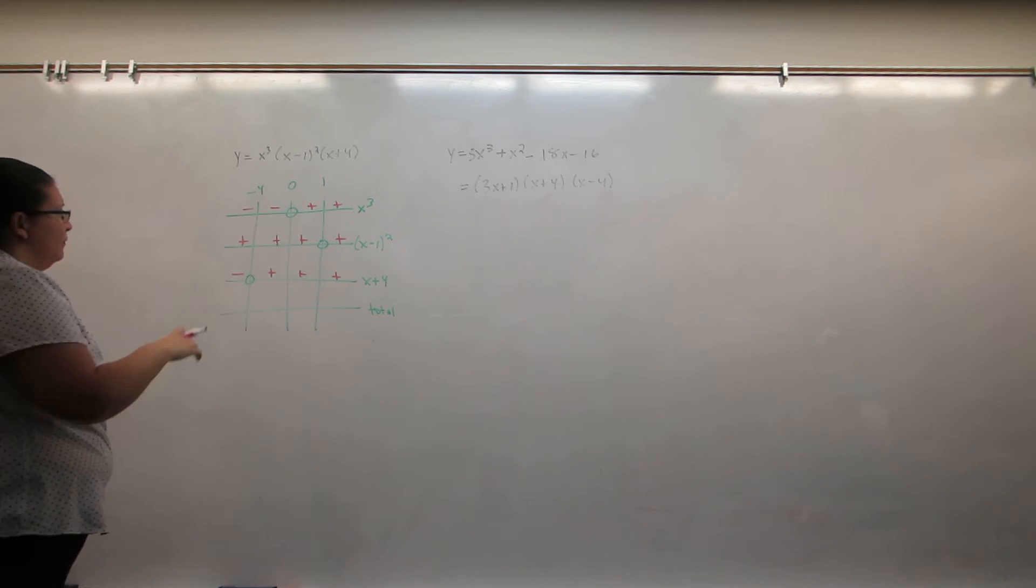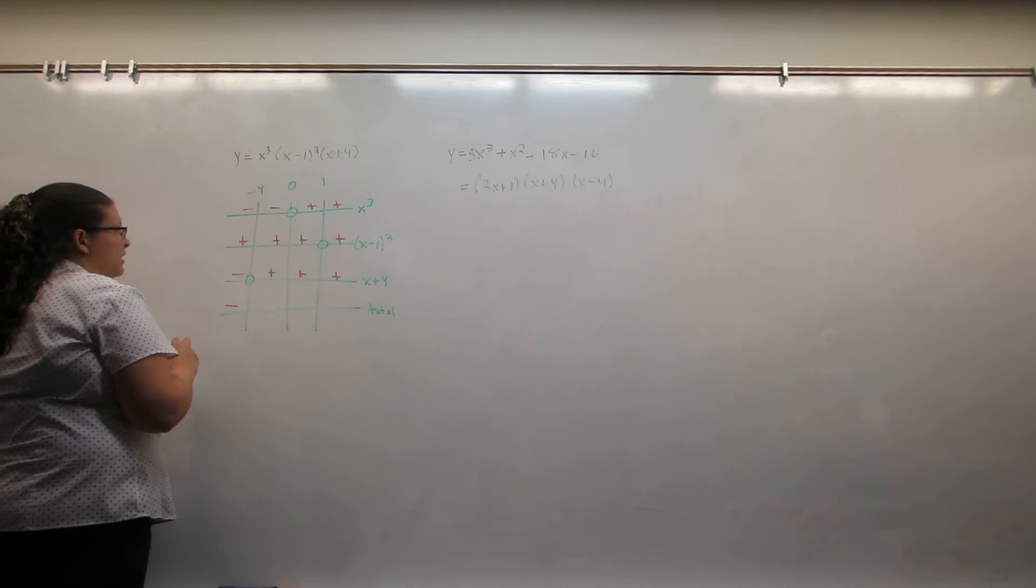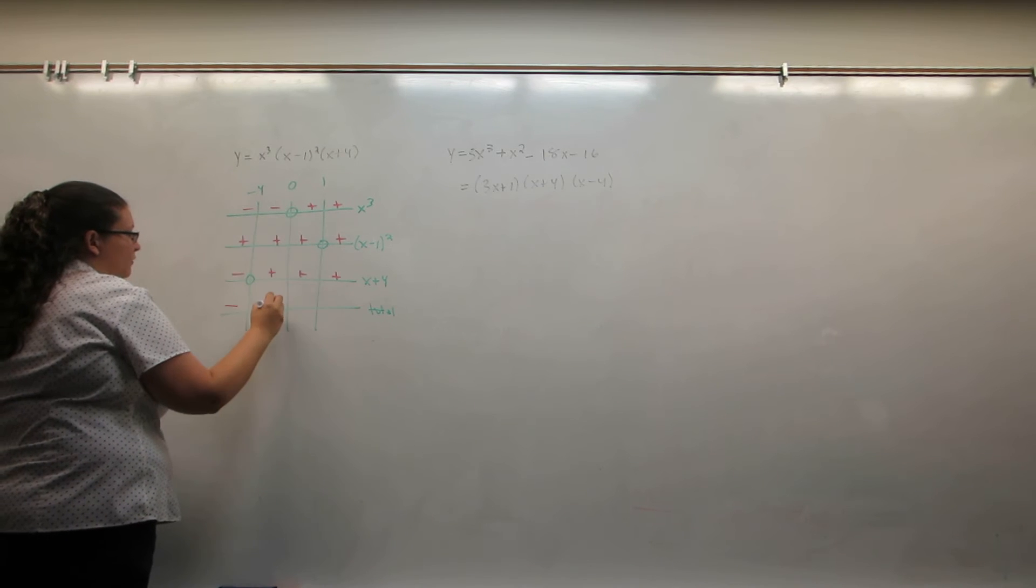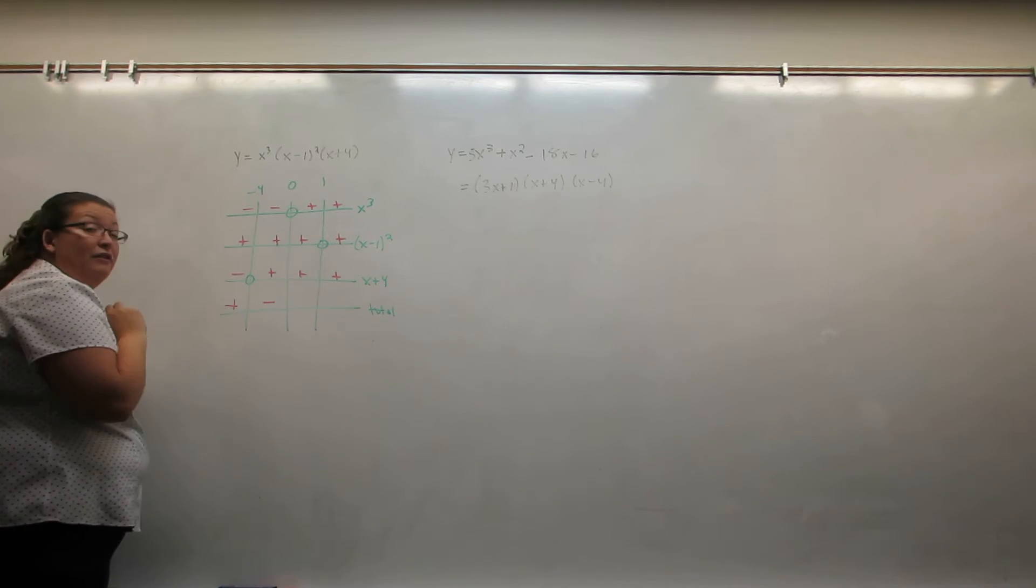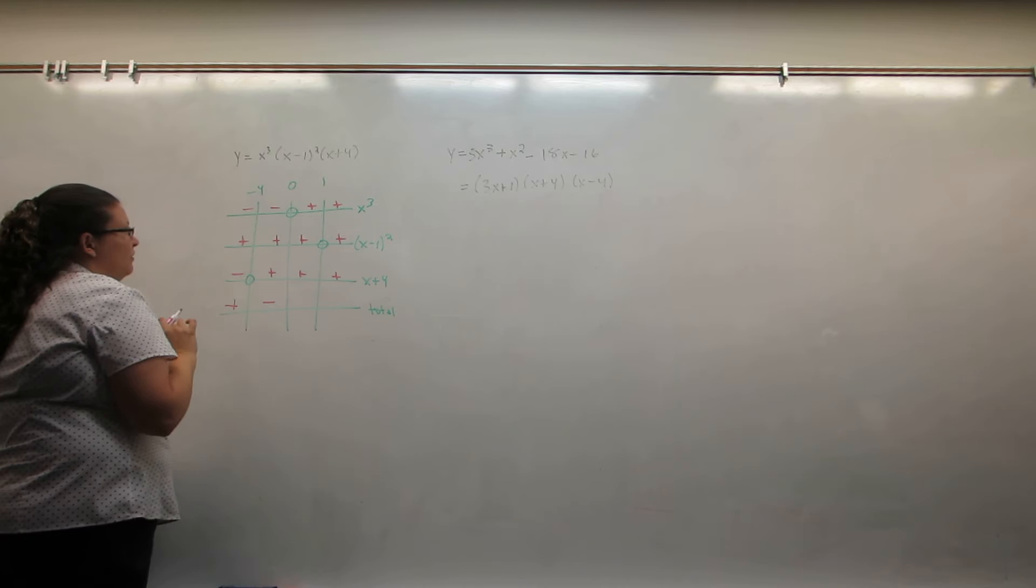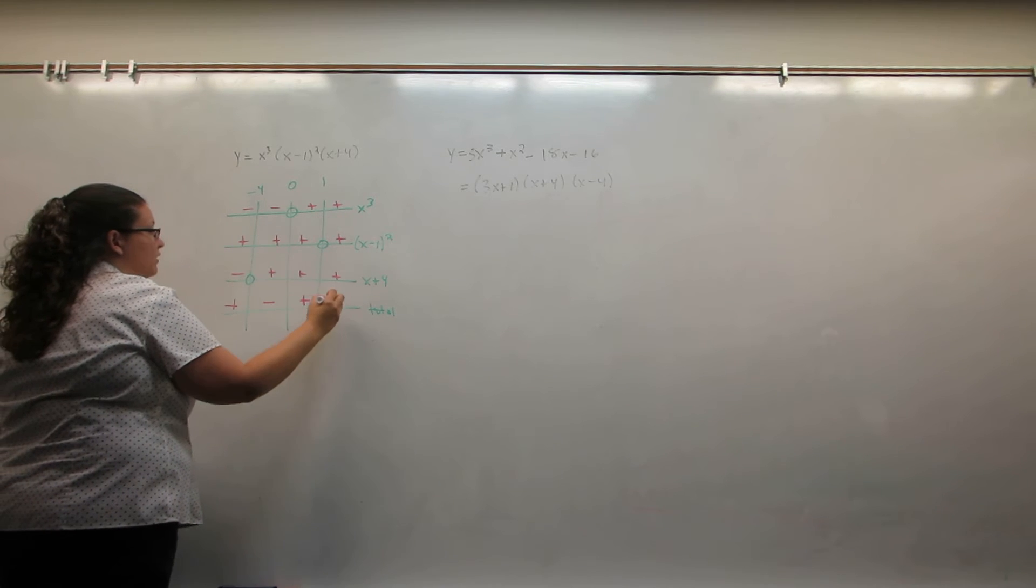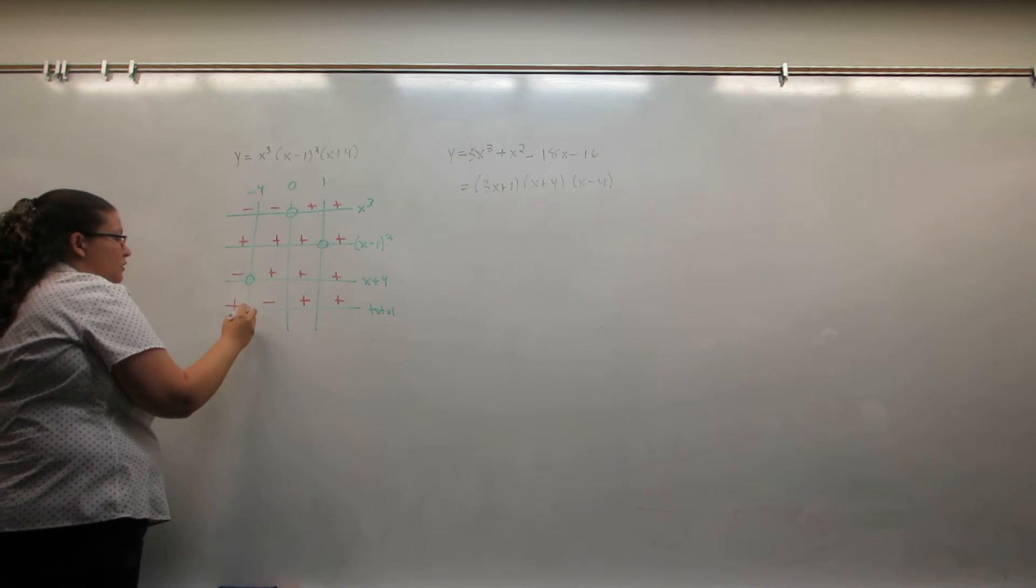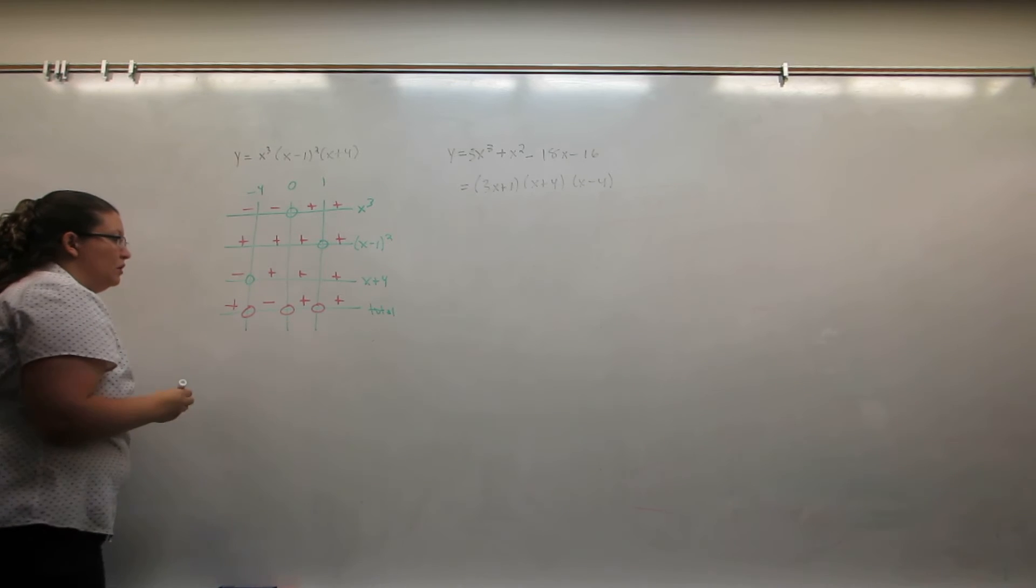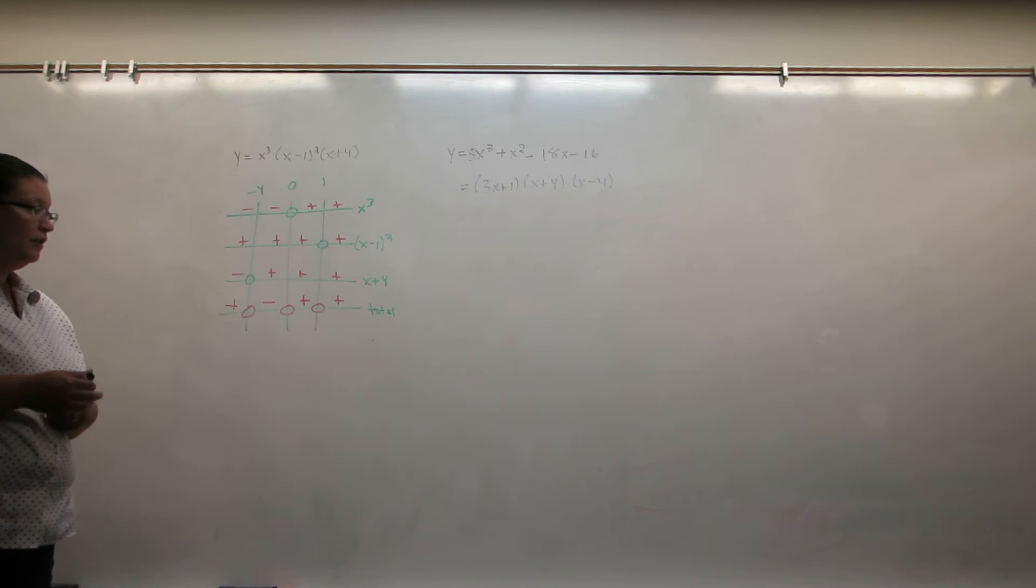Now we're going to multiply down. Two negatives makes a negative. One negative makes—oh excuse me—two negatives makes a positive. One negative makes a negative. No negatives and no negatives. Zero times anything makes those zero. And this is everything we need in order to graph the function.